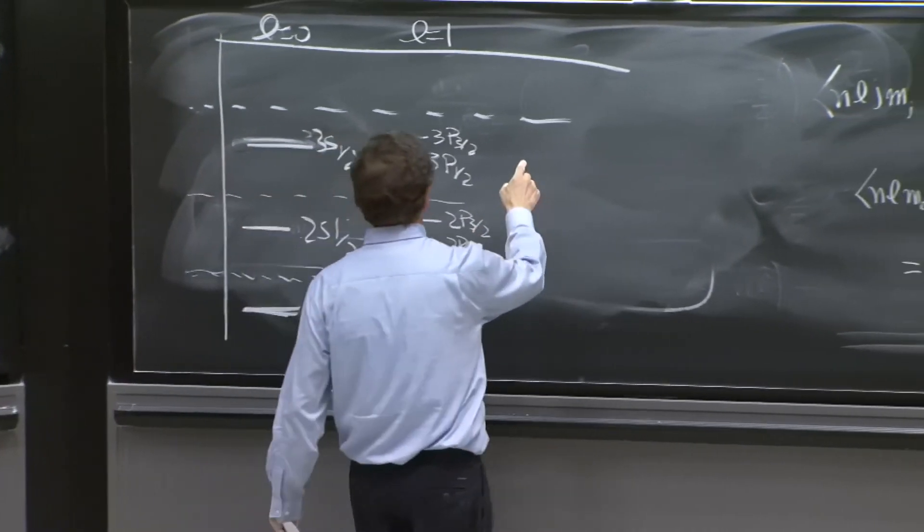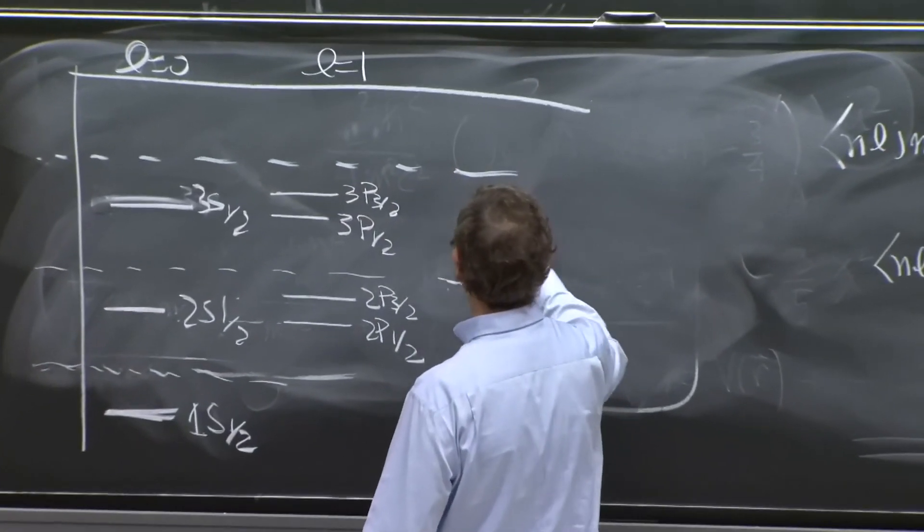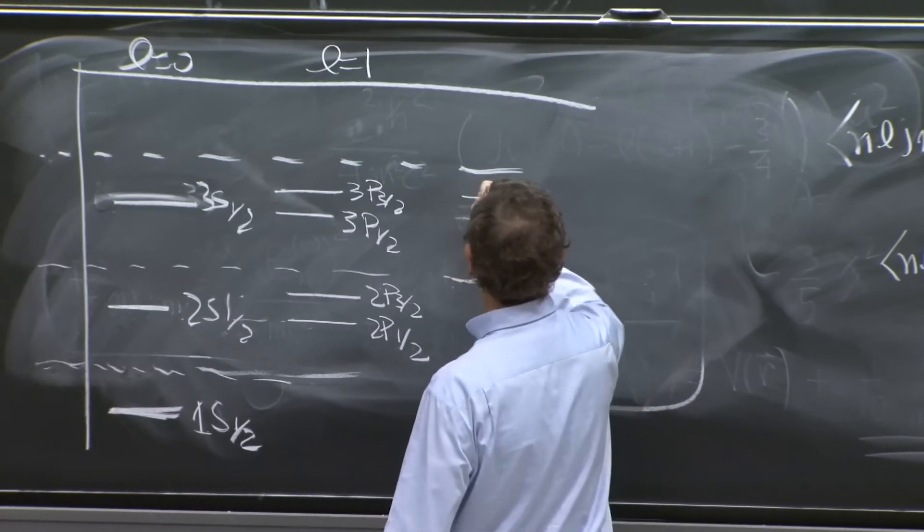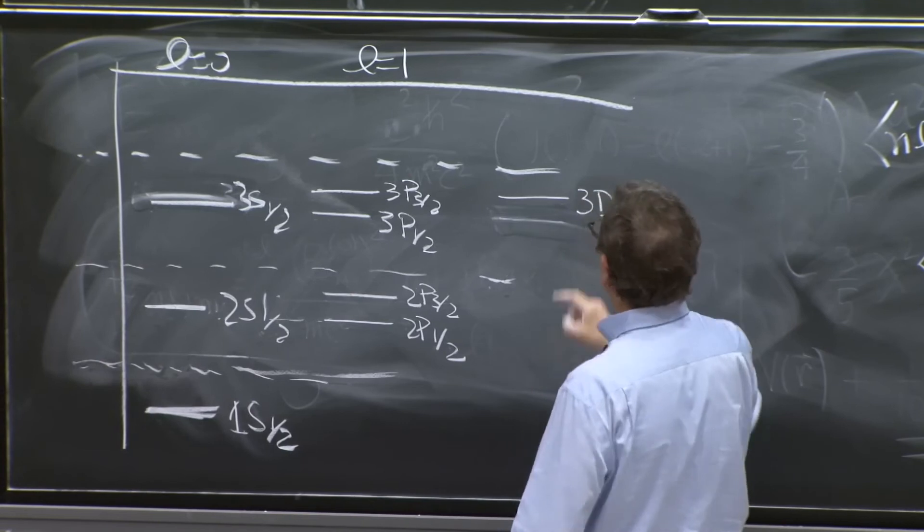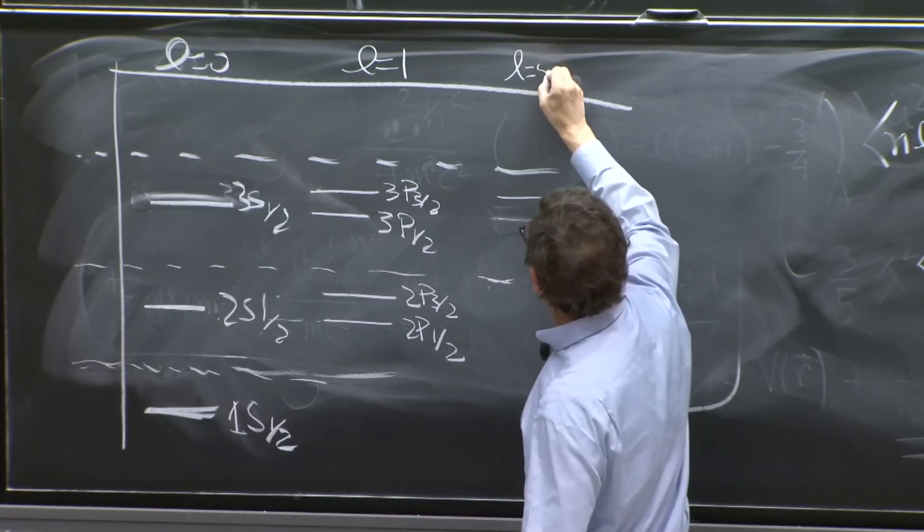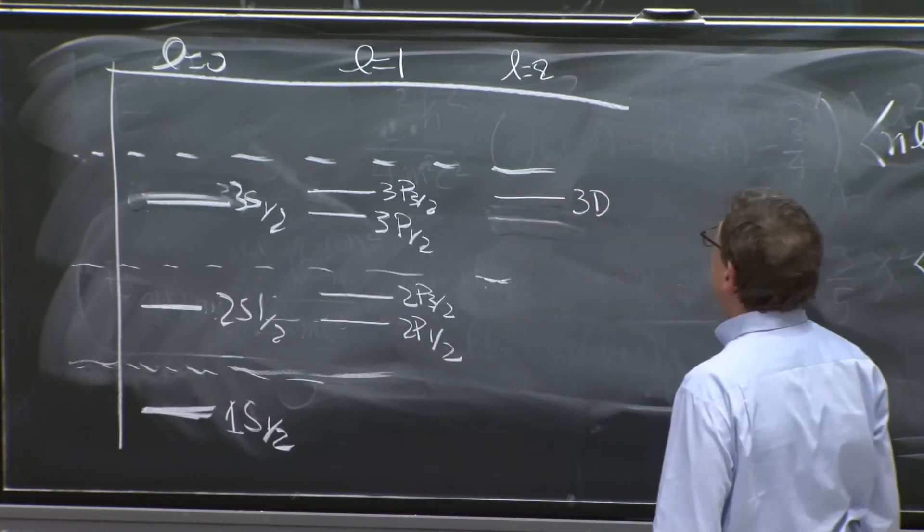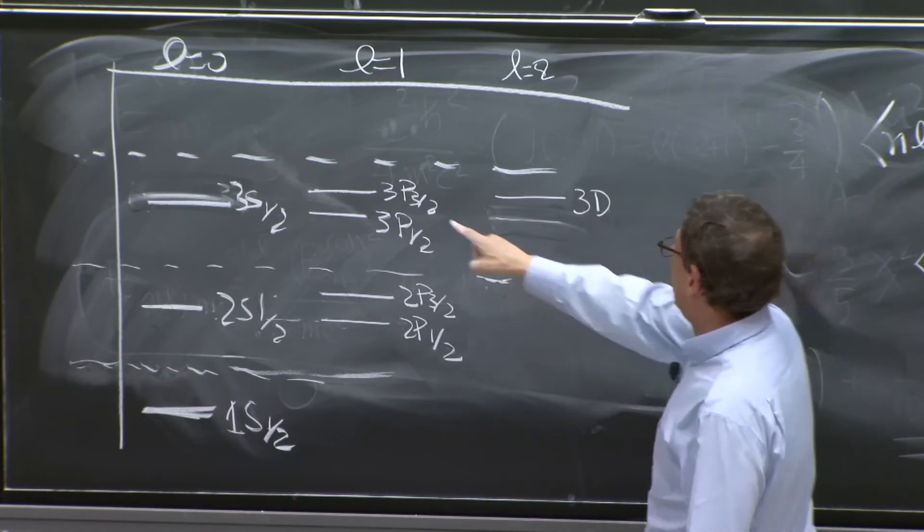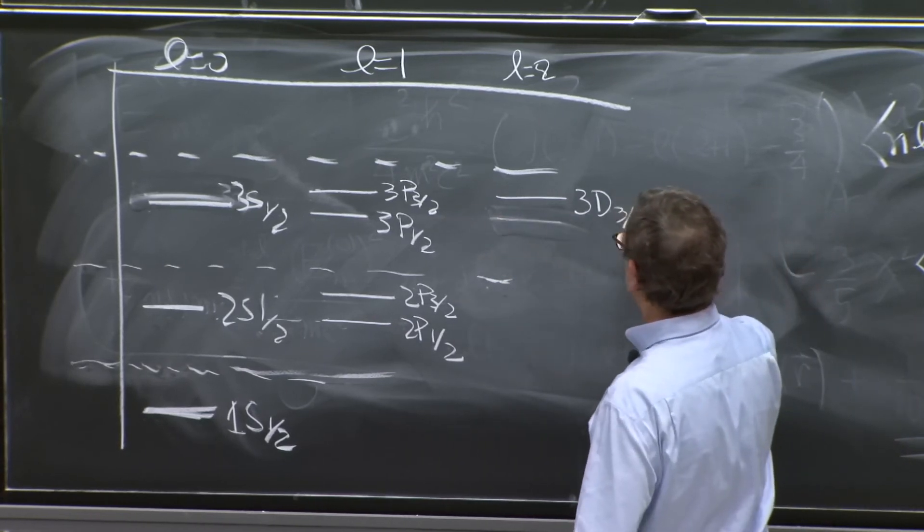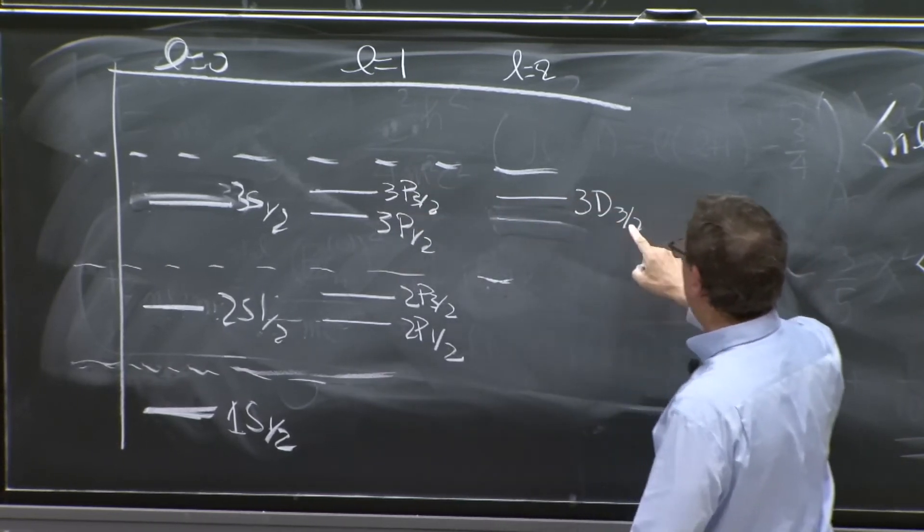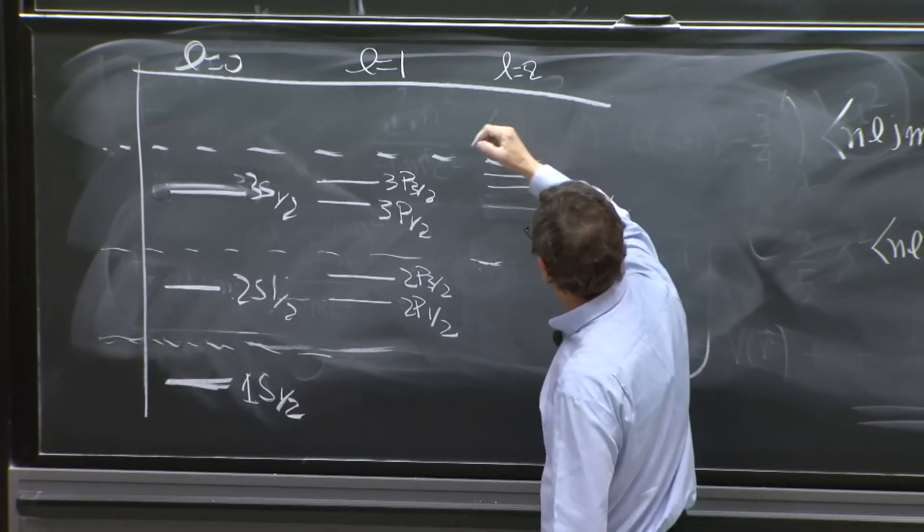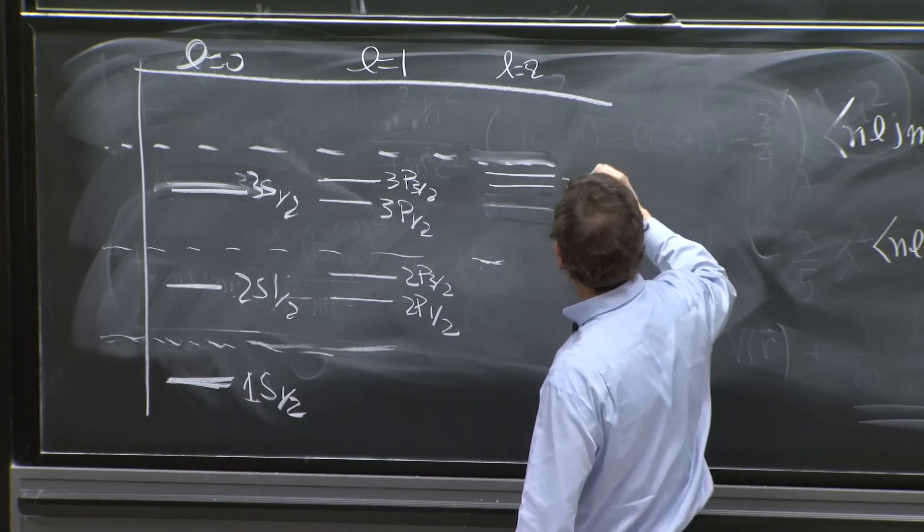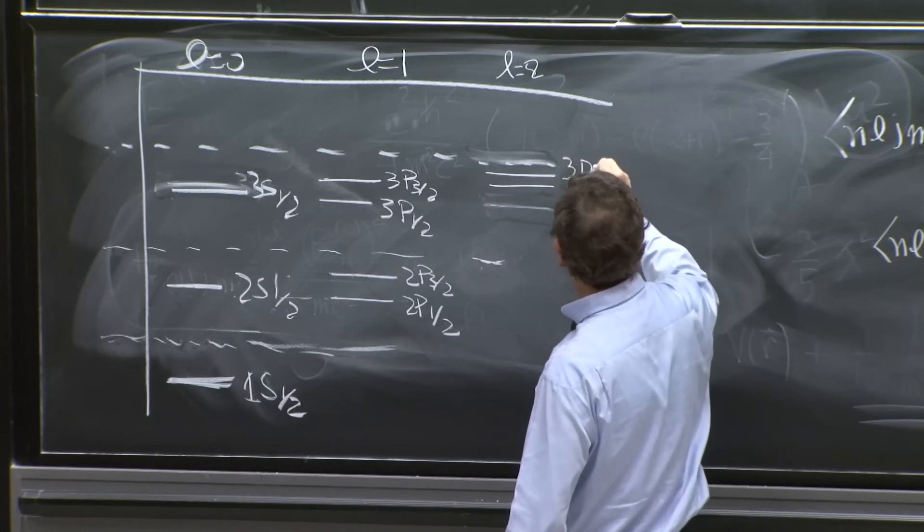And the next state here is 3d. Now you're combining l equal 2. So you get 5 halves and 3 halves. The 3 halves is degenerate with these 3 halves because it has the same j. And the 5 halves is a little higher. 3d 5 halves.